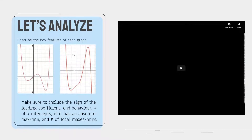The same goes for this graph. We can see that we have one local max over here and one local min. We have no absolute maximums or absolute minimums, because we reach positive infinity over here and negative infinity over here.